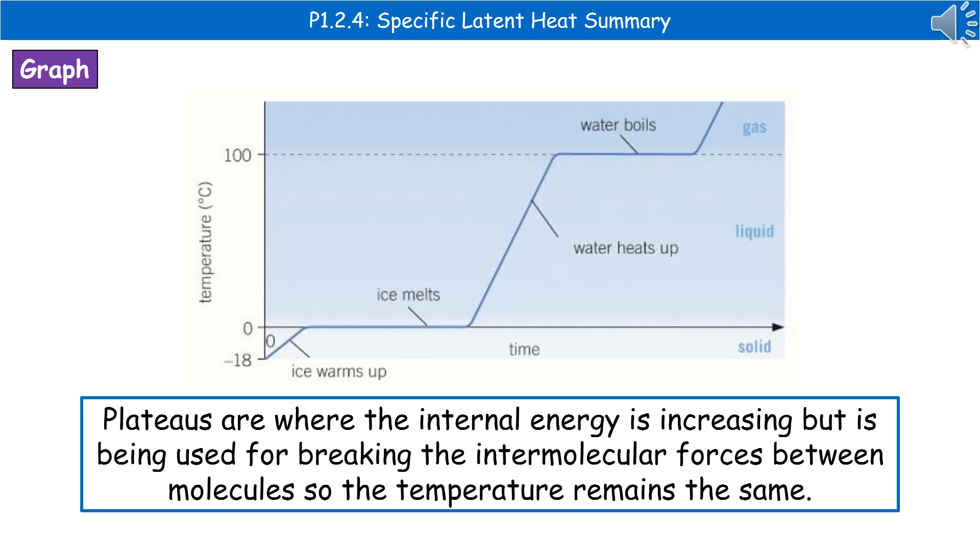So we start off at the very bottom left there with our solid ice. Initially as we start to heat it up we're increasing the temperature from minus 18 to zero. When we get to zero you'll notice that the line levels off and becomes horizontal. We call that a plateau. The reason it's going to plateau at zero is because that is the temperature at which ice melts.